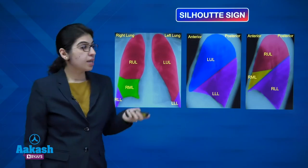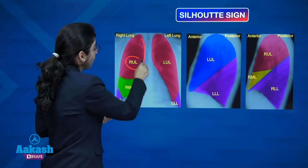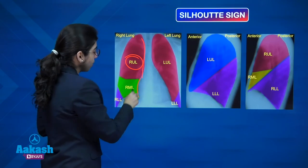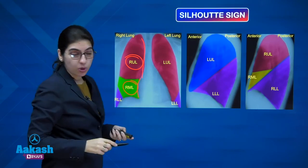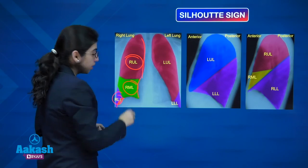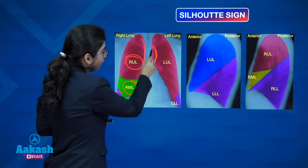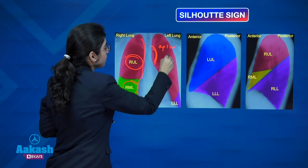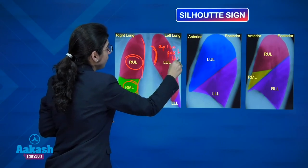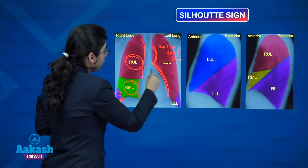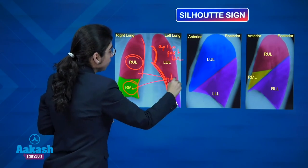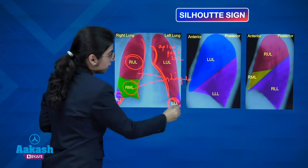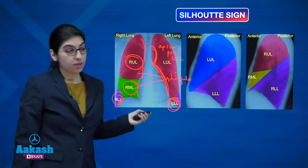The silhouette sign is very important. If the ascending aorta is obscured, pathology is in the right upper lobe. If the right heart border is obscured, it is in the right middle lobe. If the right diaphragm is obscured, it is in the right lower lobe. If the arch of aorta is obscured, it is the apico-posterior segment of the left upper lobe. If the left heart border is obscured, the corresponding lobe is lingula. If the left diaphragm is obscured, it is the left lower lobe.